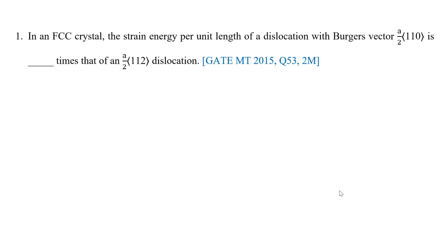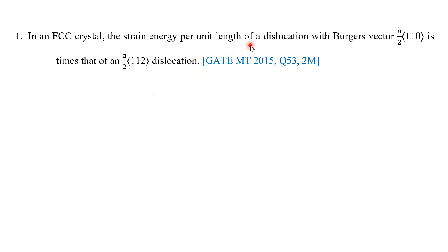The first question we will be discussing today is: in an FCC crystal, the strain energy per unit length of a dislocation with Burgers vector a/2[110] is dash times that of an a/2[112] dislocation. We have two given Burgers vectors and we need to find the ratio of strain energy of these Burgers vectors per unit length of a dislocation.